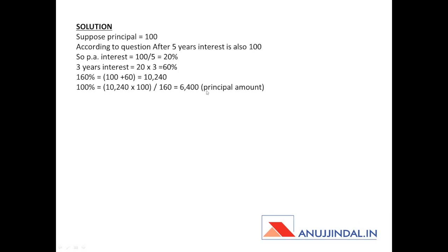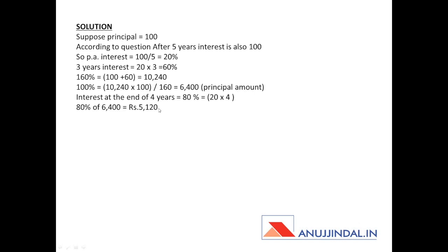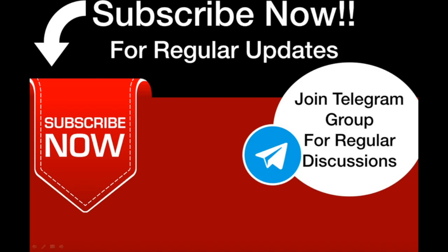The principal amount comes out to be 6,400 rupees. The question asked for the interest at the end of four years. Since the per annum rate is 20 percent, the interest in four years is 80 percent (20 × 4). So the interest at the end of four years is 80 percent of 6,400 rupees, which equals 5,120 rupees.